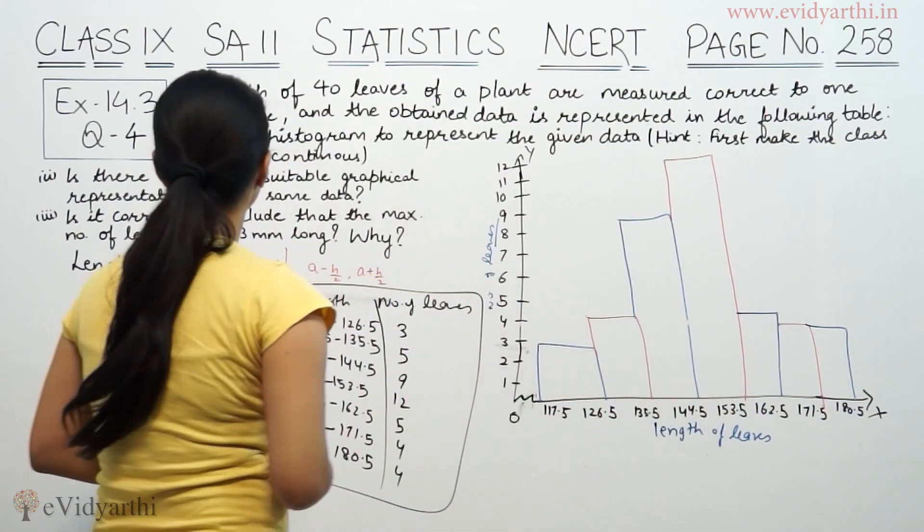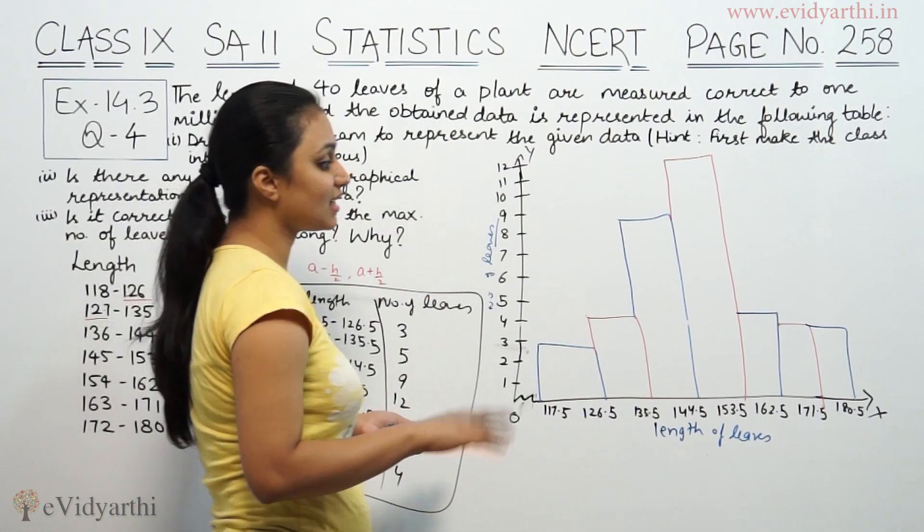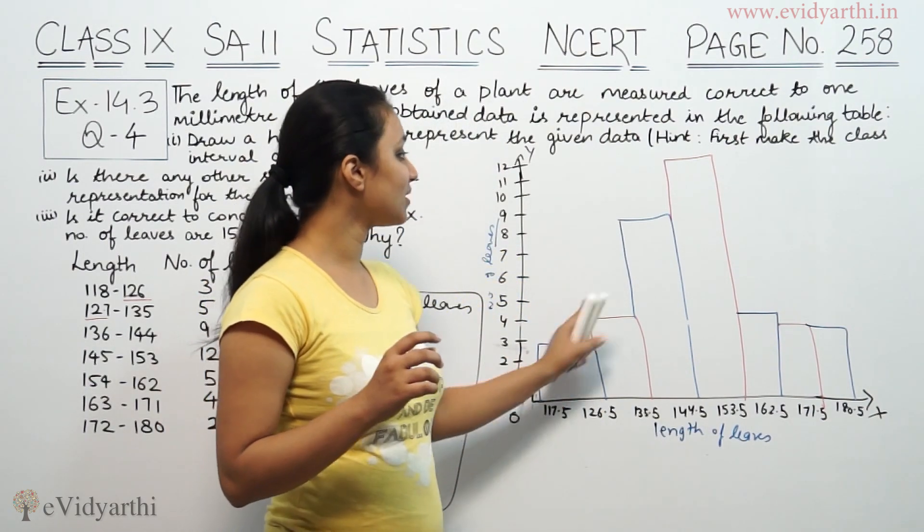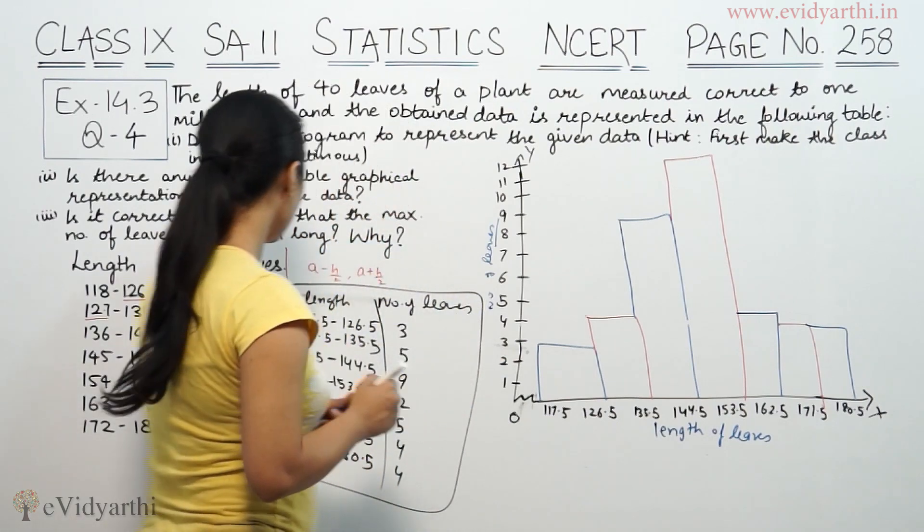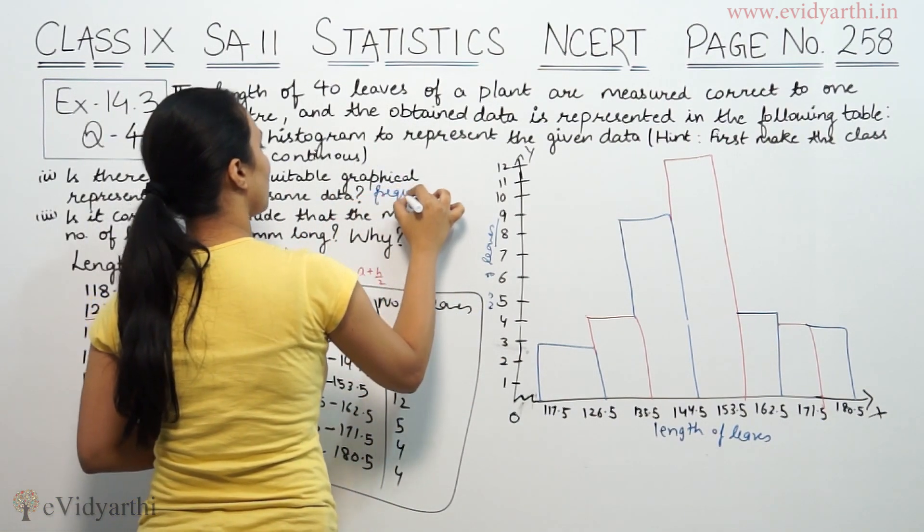Second question is, is there any other suitable graphical representation for the same data? Yes, there is frequency polygon. Frequency polygon is when the midpoint values are joined. That is frequency polygon.